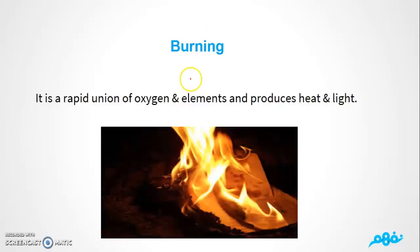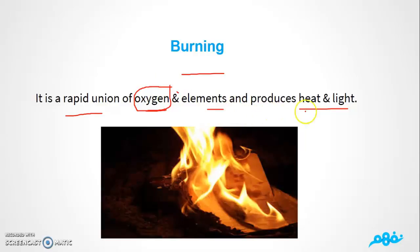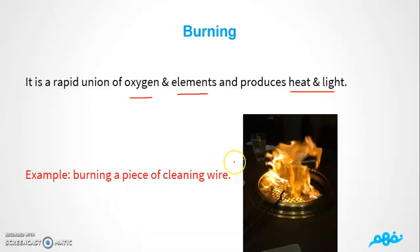What is burning? Burning is a rapid union of oxygen and elements that produces heat and light. For burning to occur, you need oxygen gas plus any element, and it will produce heat and light. We have an example here: burning of a piece of cleaning wire.